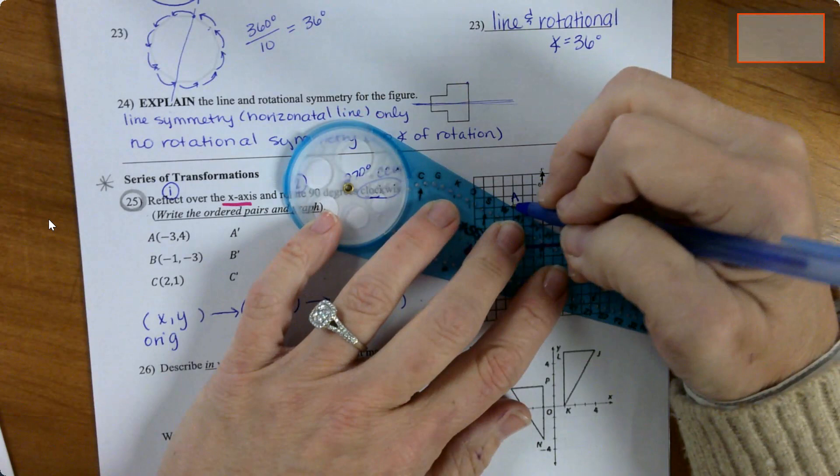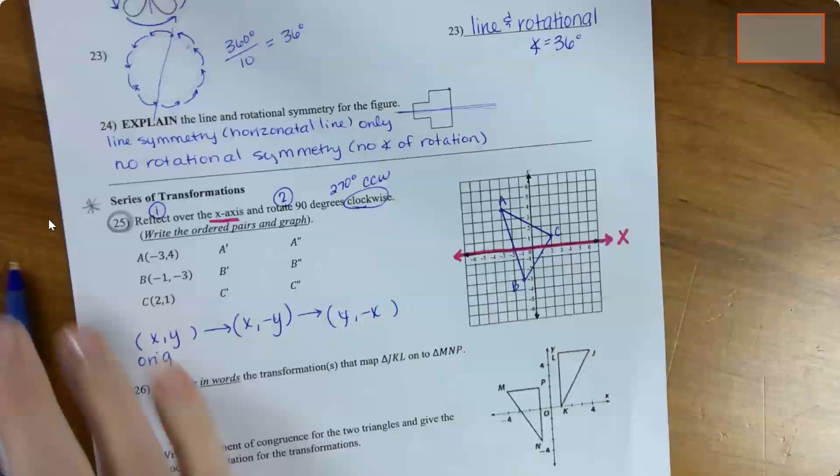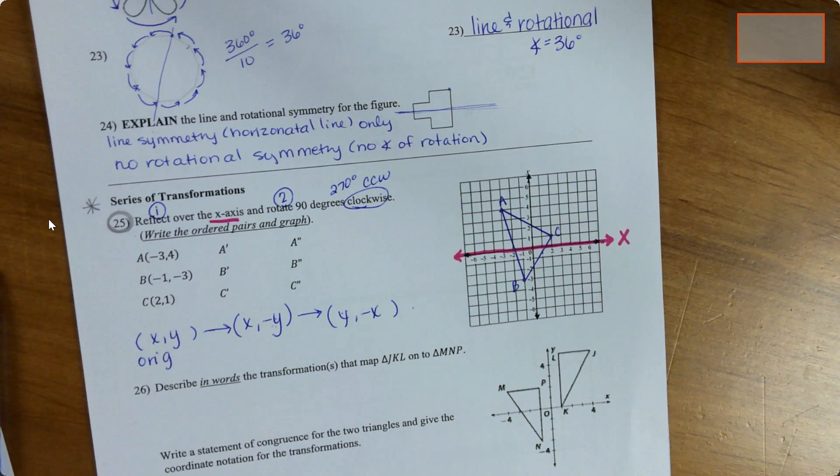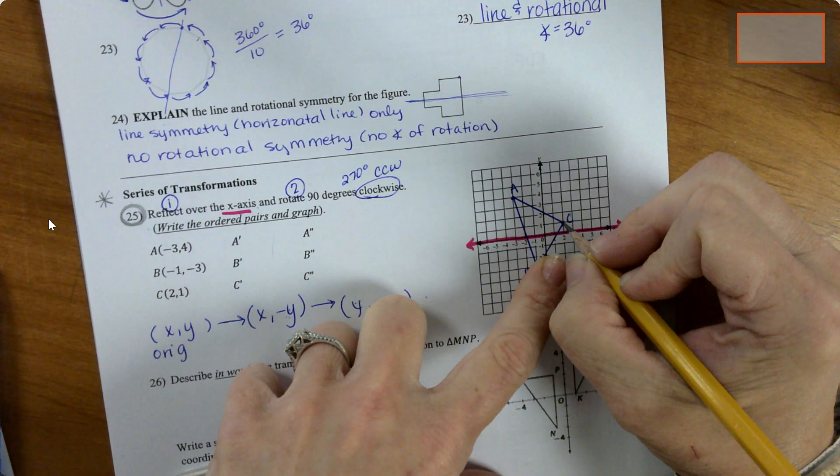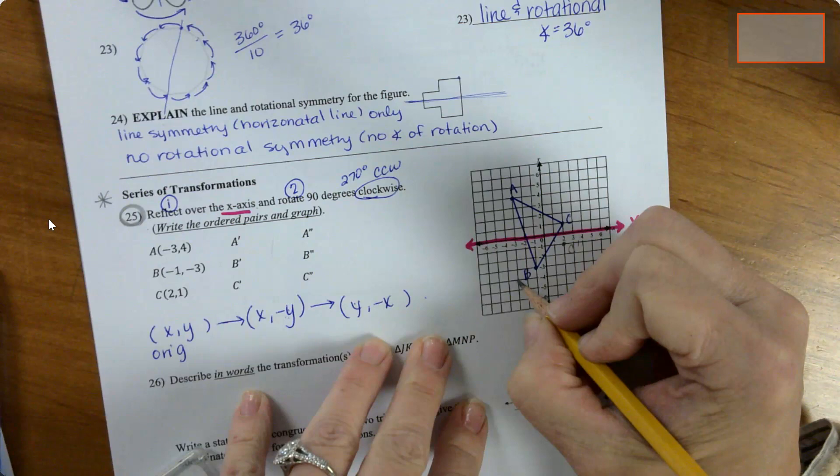So then we're going to reflect it over the x-axis. C is one away on this side, C prime becomes here, so this would be C prime. And then A is 1, 2, 3, 4, so it's 1, 2, 3, 4 on this side. This would be A prime. And B is 3 away, so it comes up over here, so B prime. And then that is my new triangle.